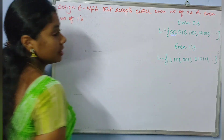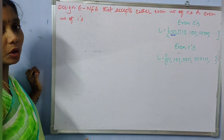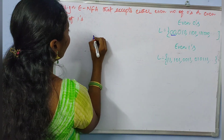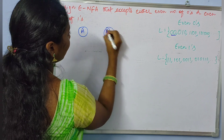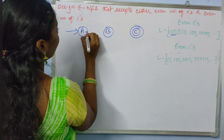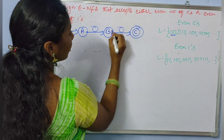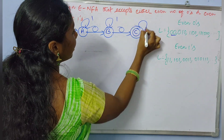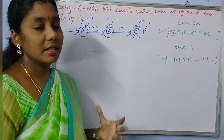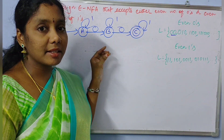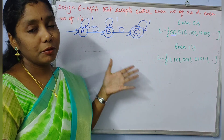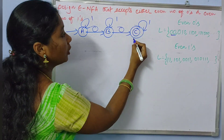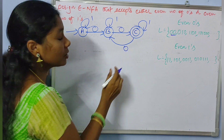The minimal string for even number of zeros is '00', so we need at least three states to draw the NFA. There is no restriction on the number of ones, so we may have any number of ones at every state as self-loops. This NFA accepts only two zeros, but we want all even numbers of zeros. To accept all even number of zeros, we need to connect another transition with zero from state C back to state B.